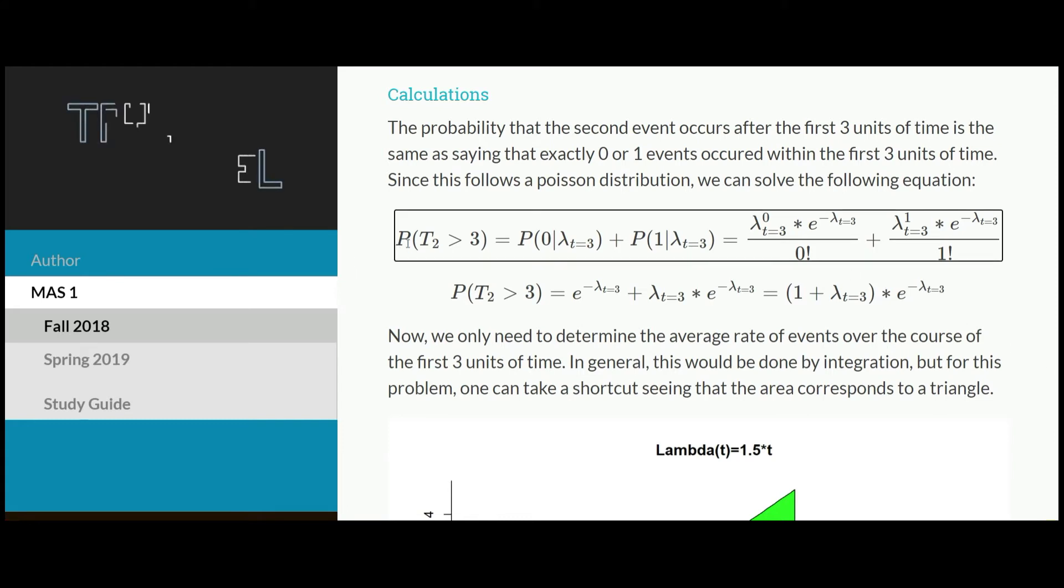So first off, we can say, what's the probability that the time until the second event is greater than 3? That is the same as saying, what if exactly 0 or exactly 1 events occur in the first 3 units of time? Because if 0 events occur in the first 3 units of time, I don't know when the first, second, third, any of those events occur, except for I know that it occurred after 3 seconds, because I know there are exactly 0 events in the first 3 units of time. And then same thing goes for 1. We're saying exactly 1 event occurred, and so I know that the second event did not occur until sometime after 3, which is enough for us to do this calculation. We know it follows a Poisson process with some unknown lambda.